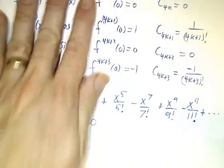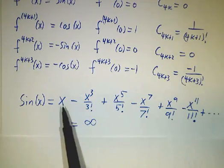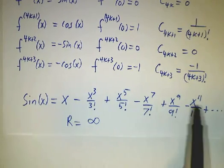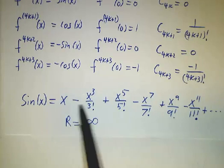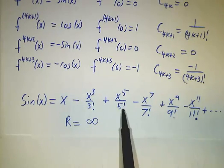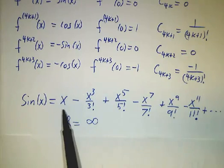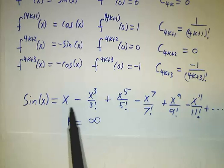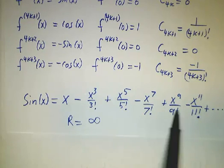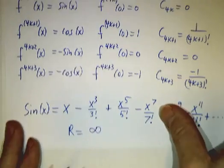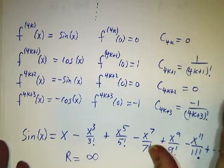Putting it together, you get positive contributions from the 1st, 5th, 9th derivatives and so on, and negative contributions from the 3rd, 7th, 11th derivatives and so on. So the series is x minus x cubed over 3 factorial plus x to the fifth over 5 factorial minus x to the seventh over 7 factorial, and so on — the sign flips every two terms. Applying the ratio test or root test gives a radius of convergence of infinity; this series works for absolutely all values of x.